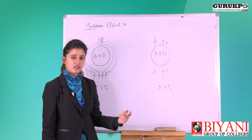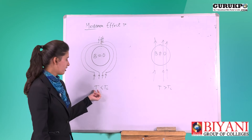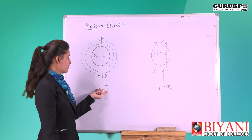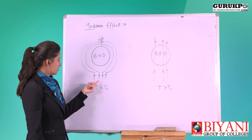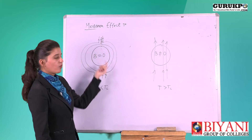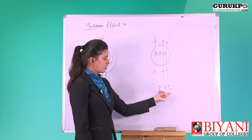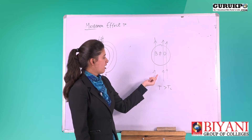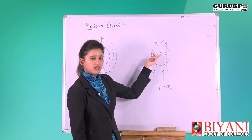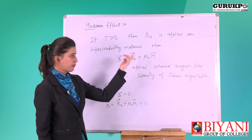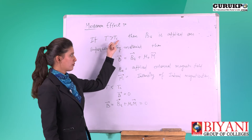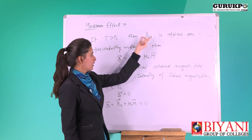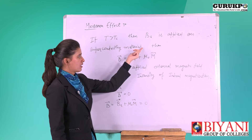So according to the Meissner effect, inside the substance B equals zero, but this condition holds when temperature is less than the critical temperature. In this condition, magnetic lines move outside. When temperature is greater than the critical temperature, magnetic lines move inside, and B_a — the applied external magnetic field — is applied on the superconducting material.